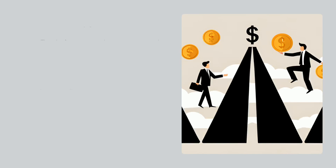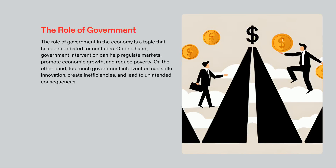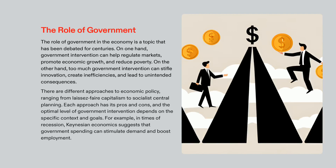For centuries, government intervention has been a major factor in the economies of nations. Different approaches to economic policy range from laissez-faire capitalism to socialist central planning, still causing debate over the appropriate level of government intervention. When considering which type and level of intervention will be most effective, the context and goals need to be taken into account. For instance, Keynesian economics suggests government spending can stimulate demand and boost employment during times of recession. Policymakers must consider the pros and cons of various economic approaches in order to determine which one will help countries achieve their economic objectives.